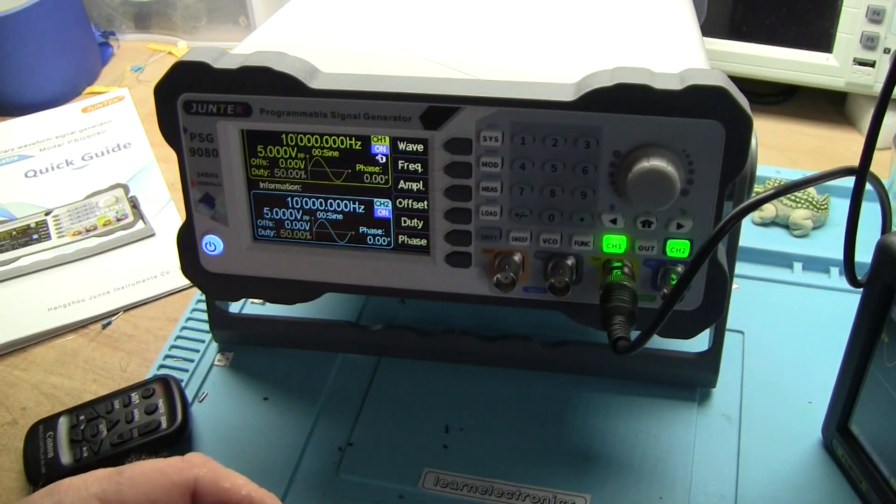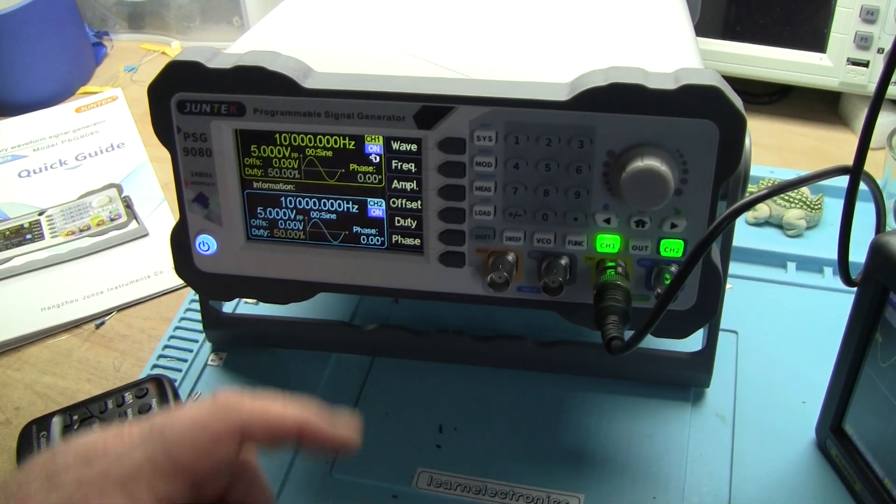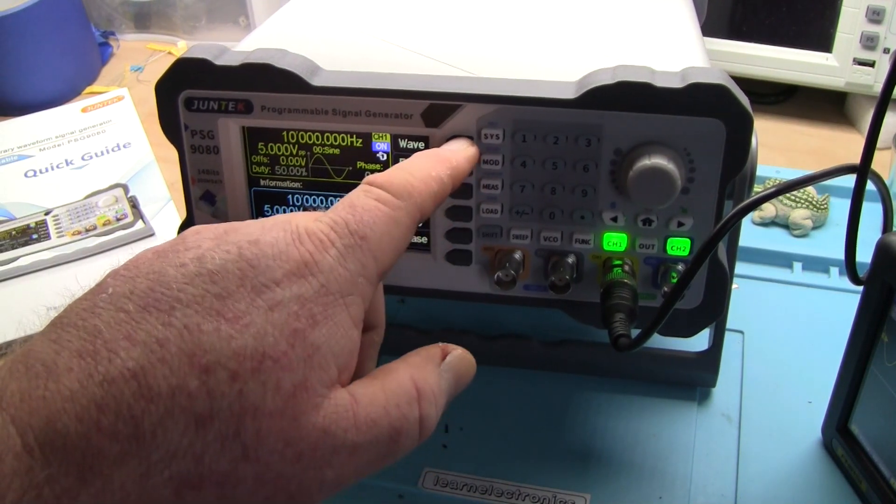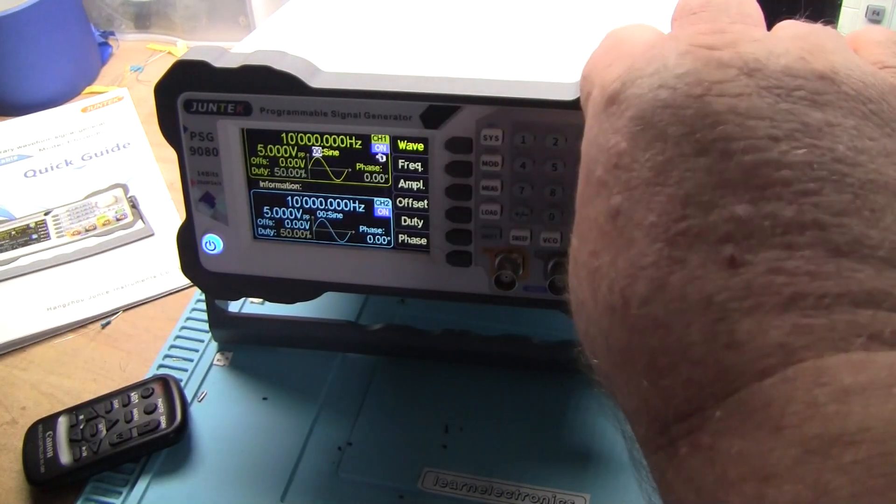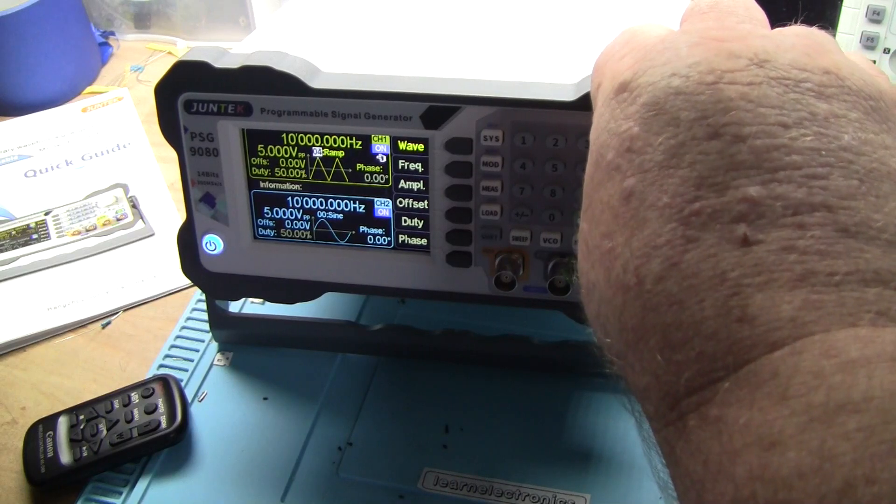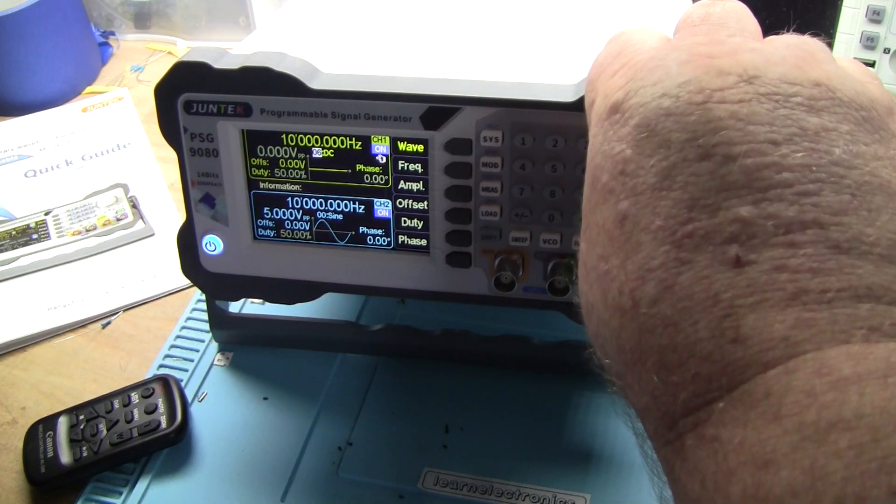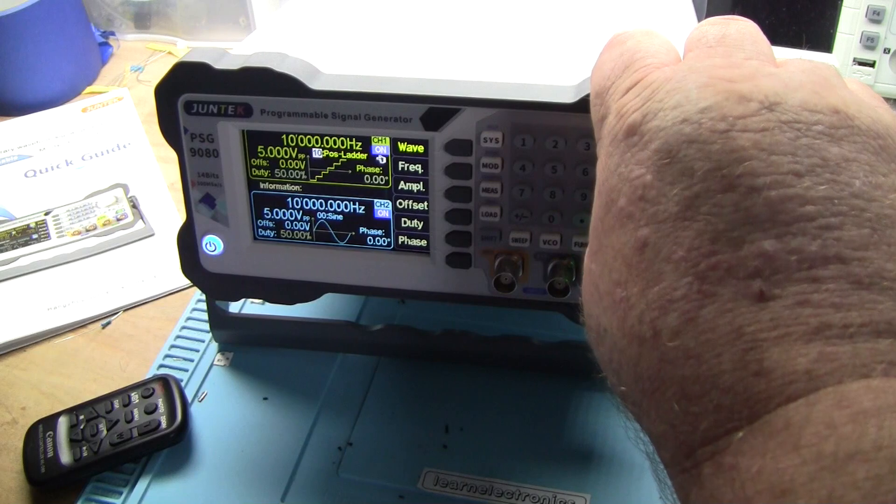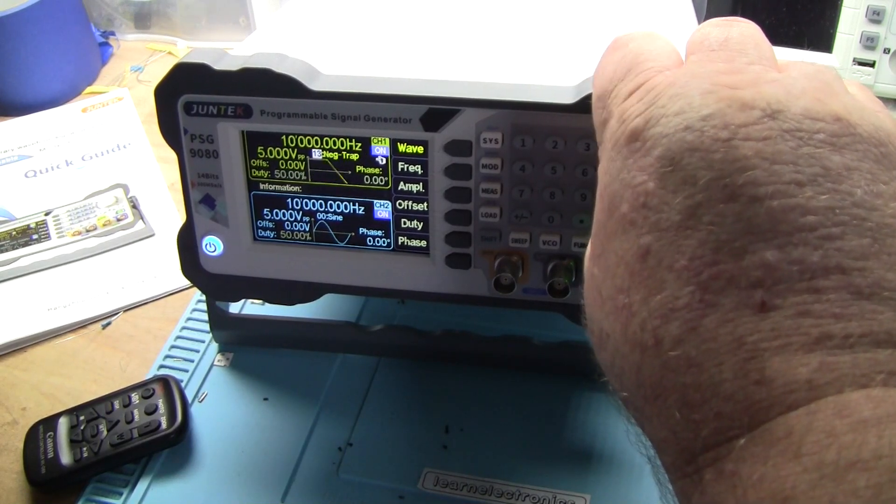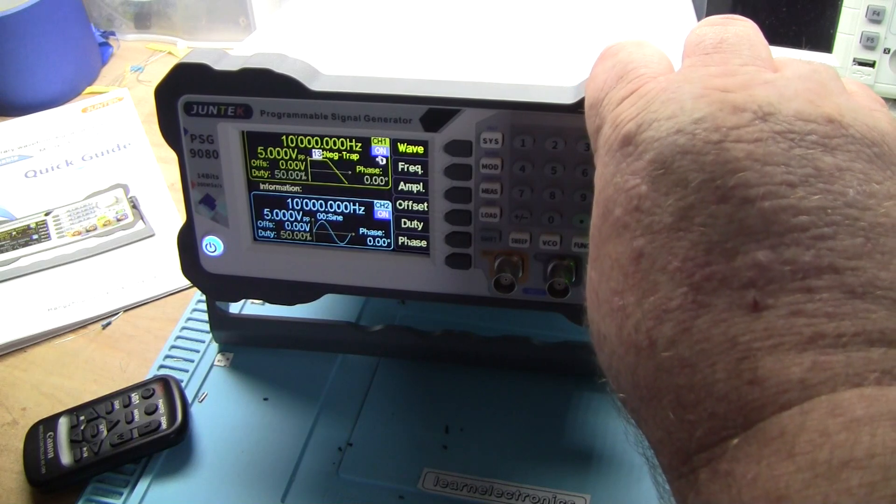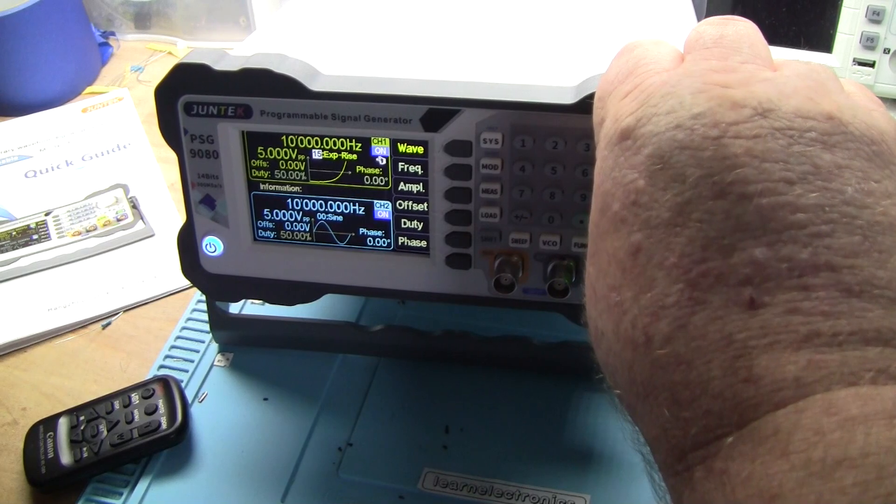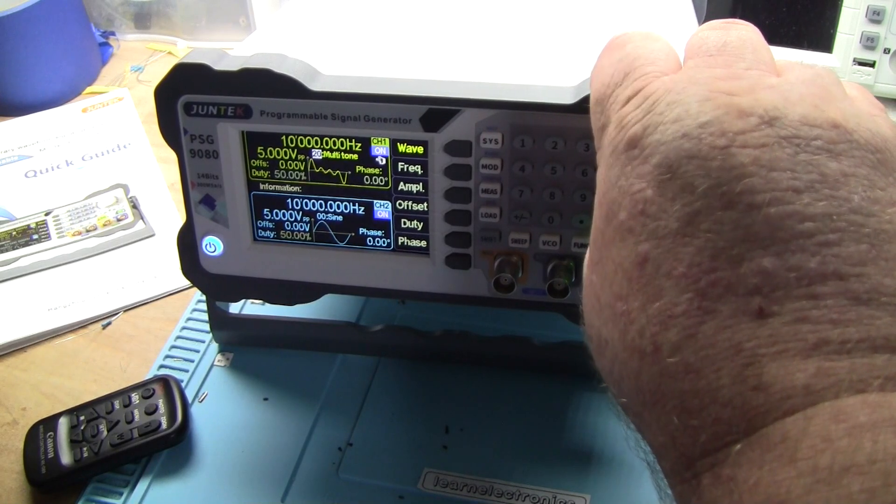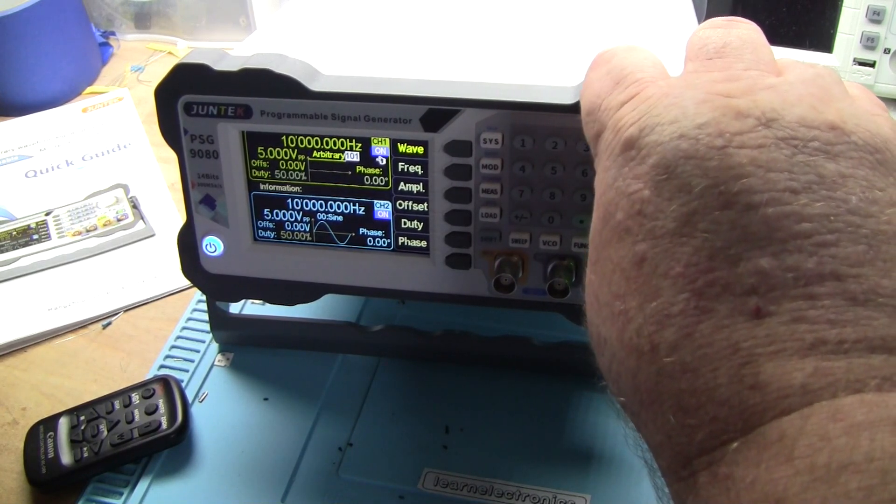Now looking at this, we have wave, frequency, amplitude, offset, duty cycle, and phase. If we want to change our wave type, we can turn the knob: sine, square, pulse, triangle, ramp, CMOS, DC, dev sine, half wave modulation, full wave modulation, positive ladder, negative ladder, trapezoidal, white noise, exponential rise, exponential fall, logarithmic rise, logarithmic fall, sinc pulse, multi-tone, Lorenz, and then you have your arbitraries.